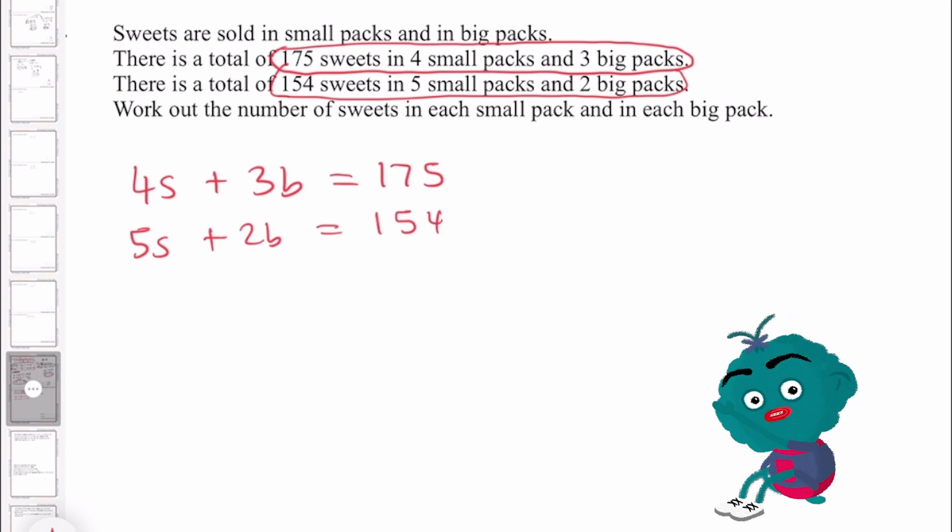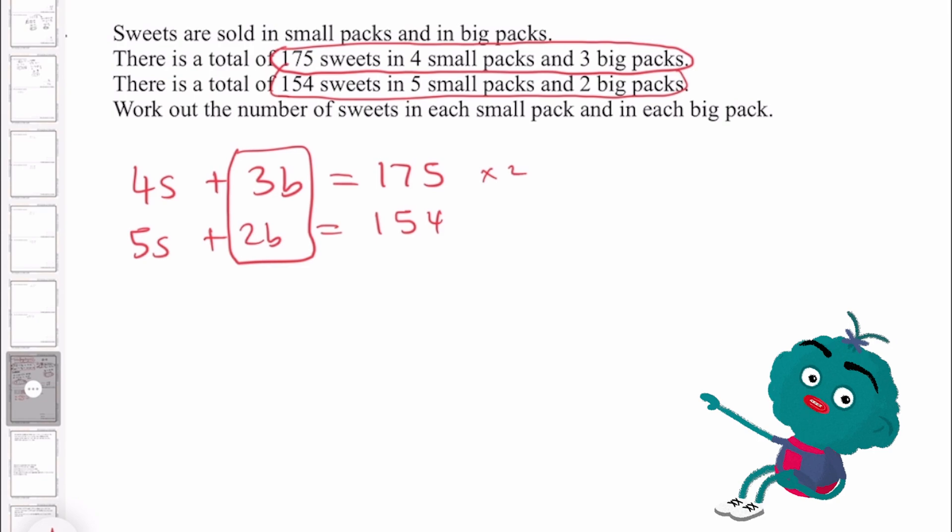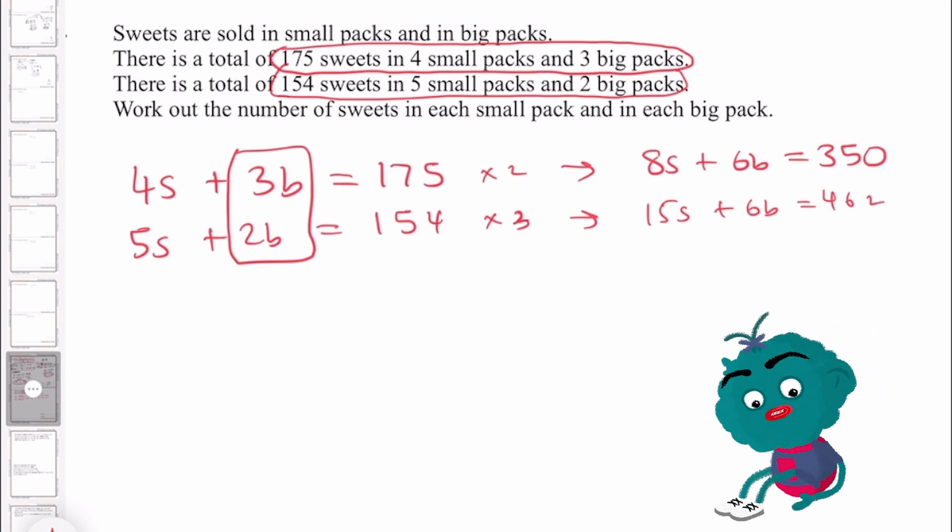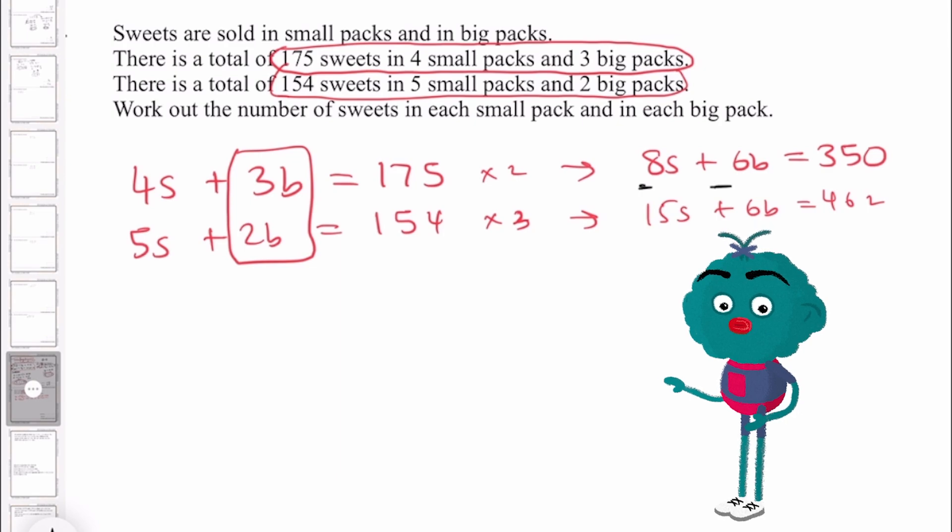As you can see, the coefficients are not the same. But I'm going to make b the same. We know that three and two both go into six. So let's times this by two and times this by three. And our new equations will now be 8s plus 6b, which equals 350, and 15s plus 6b, which equals 462. And instantly, we can now subtract this out.